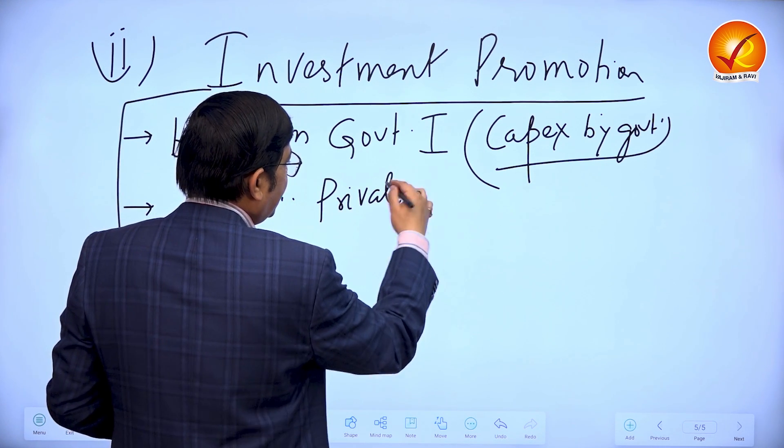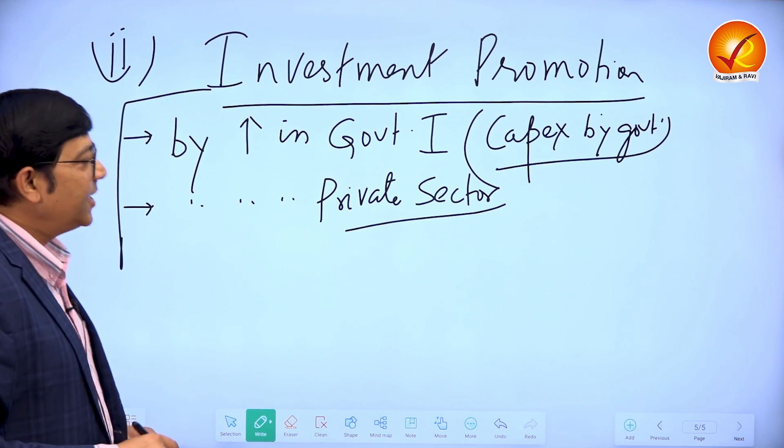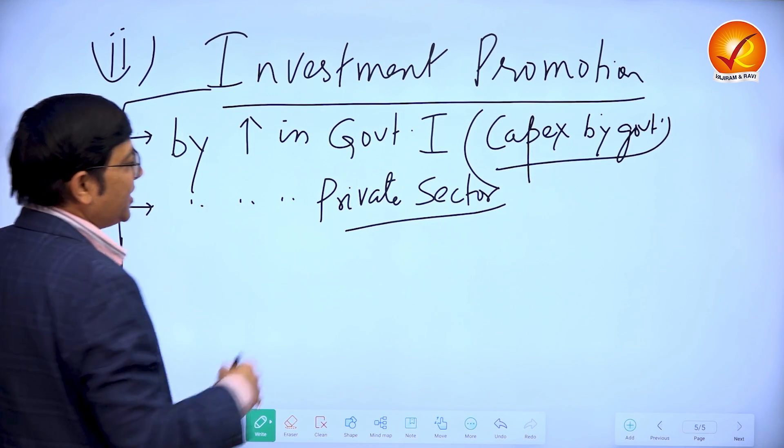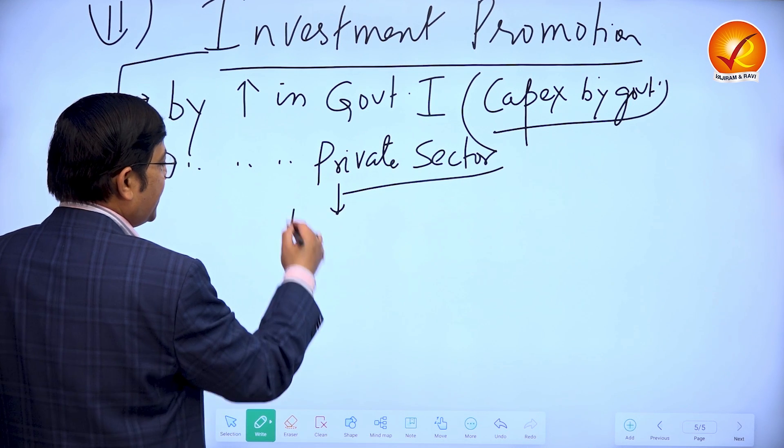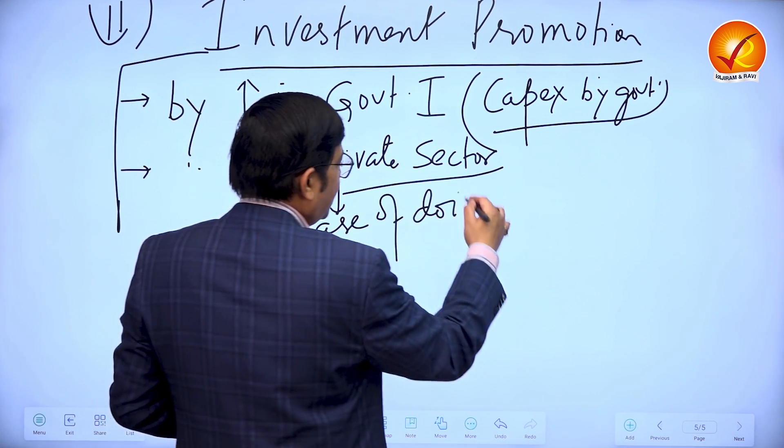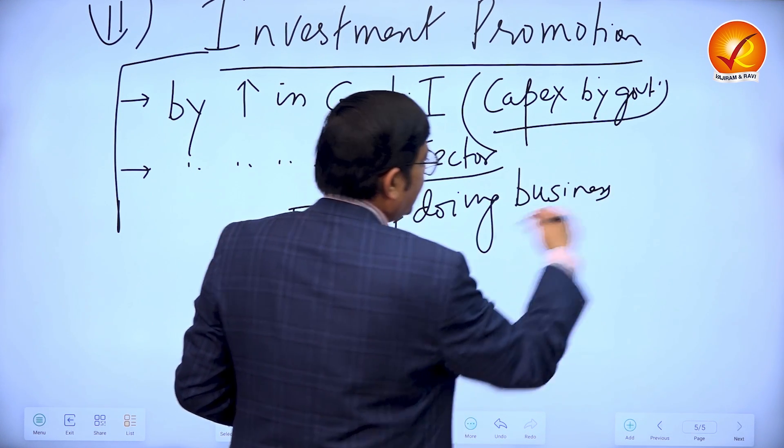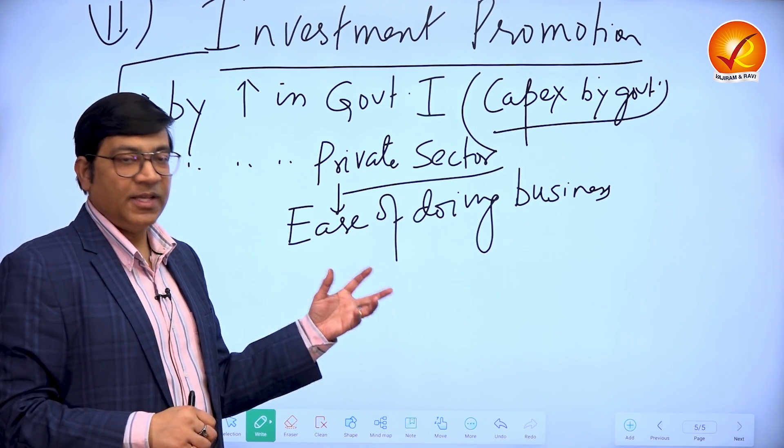Actually, private sector has more potential to increase investment in an economy. For increasing investment in the private sector, one can talk about things like ease of doing business. Ease of doing business basically means how to make the regulations easier for the private sector to increase their investment.